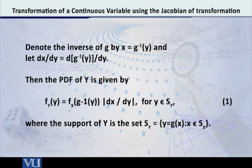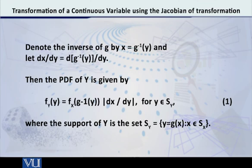After this, we want to do a transformation. We are trying to transform the random variable X to the random variable Y, and we are interested in finding Y's distribution or density function. In this theorem, the transformation is given by Y equal to G of X.